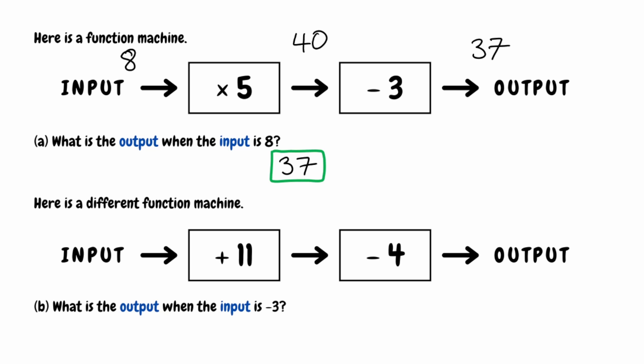We're going to do exactly the same thing for this next function machine. We have our input, we then have to add 11, we then subtract 4, and that gives us our output. For part B, we need to figure out the output when the input is negative 3. Starting with negative 3, we add 11, which gives us positive 8. We then do 8 take away 4, which gives us 4. So when our input is negative 3, our output will be 4.